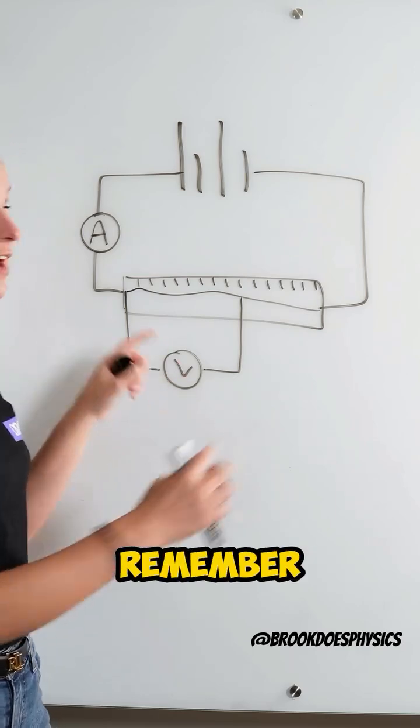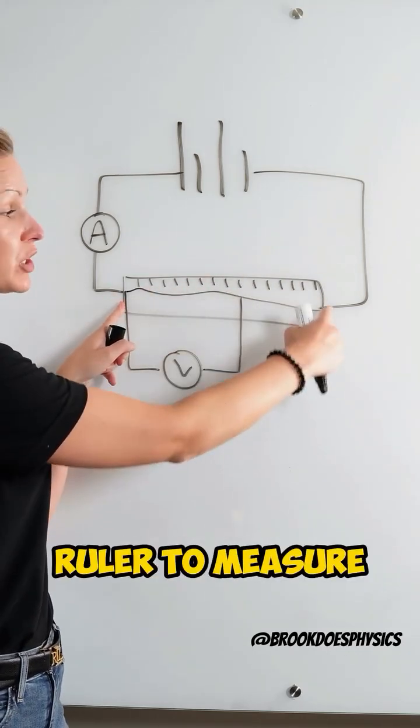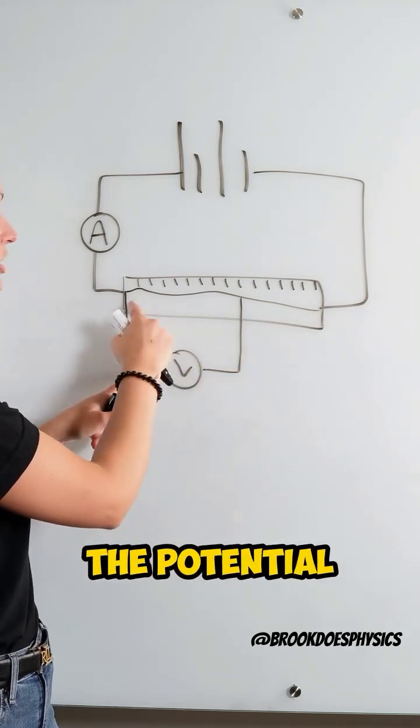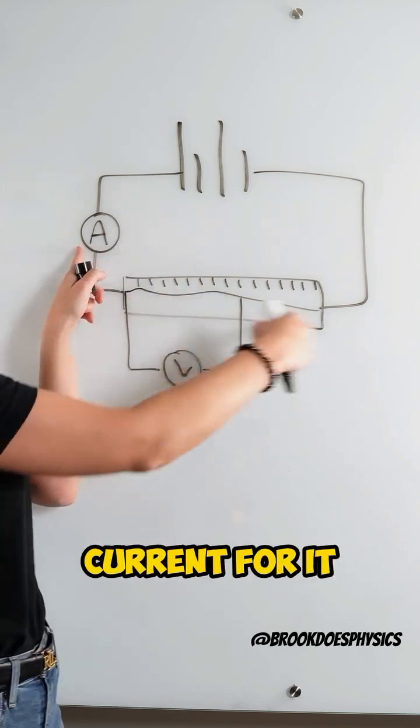So at school you probably remember having a length of wire and what you did was used a meter ruler to measure the length of the wire. You used a volt meter to measure the potential difference across the wire and an ammeter to measure the current through it.